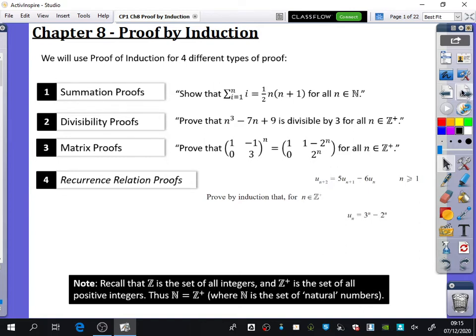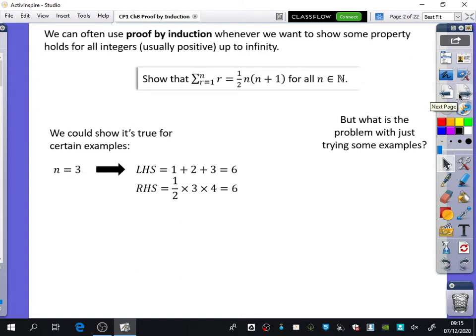So what we're going to do is think about what proof by induction actually is. So I've said here we can often use proof by induction whenever we want to show that some property holds for all integers, usually positive, all the way up to infinity. Now we looked at this summation proof that we've got here before where we wanted to show that the sum of R from R equals 1 to N was a half N, N plus 1 for all members of N of the natural numbers. And we've actually done some proofs of this when we did it a long time ago. I think we did some geometric proofs. We drew out different diagrams.